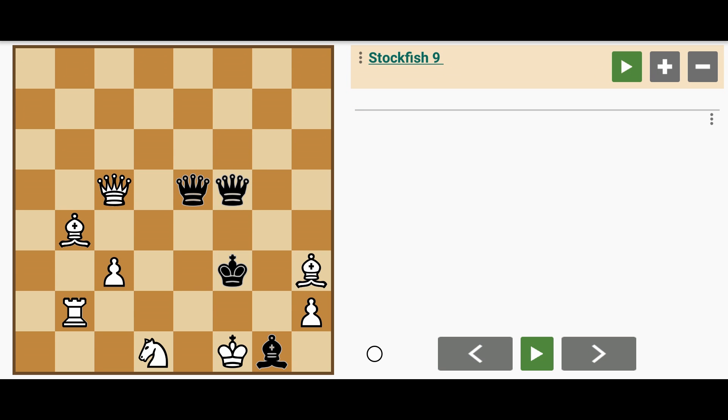black happens to have two queens and a bishop. The Shannon material value is basically 18 plus 3, that's 21. But white on the other hand has a queen, two bishops, a knight, a rook and a pawn.